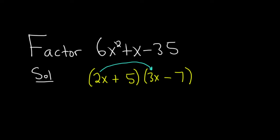2x times 3x is 6x². 5 times negative 7 is negative 35. The inner piece is 15x. The outer piece is negative 14x. Oh, so lucky. When you add these, you get x. That's it.